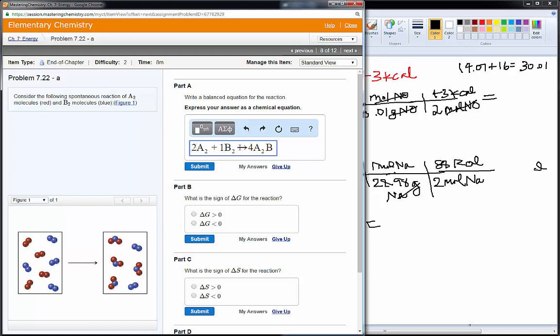So, for every two A2s, I have one B2 that reacts, and I get two A2Bs.